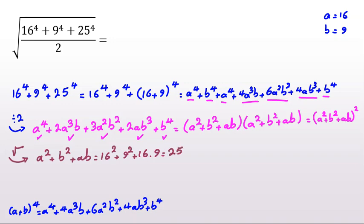16 squared is 256 plus 9 squared is 81 plus 9 times 16 is 144. It will be 256 plus 81 plus 144. 256 plus 81 is 337, plus 144, so the answer is 481.